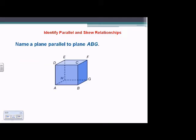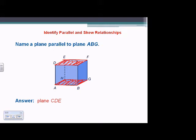Name a plane parallel to plane ABG. We have plane ABG — if that's the bottom of a little cubic box, then the top is parallel to it. We can name that DCF, DEF, CDE, or however we want, but the top plane is parallel to ABG. They name it CDE; any name works for that plane as long as we're referring to that specific plane.